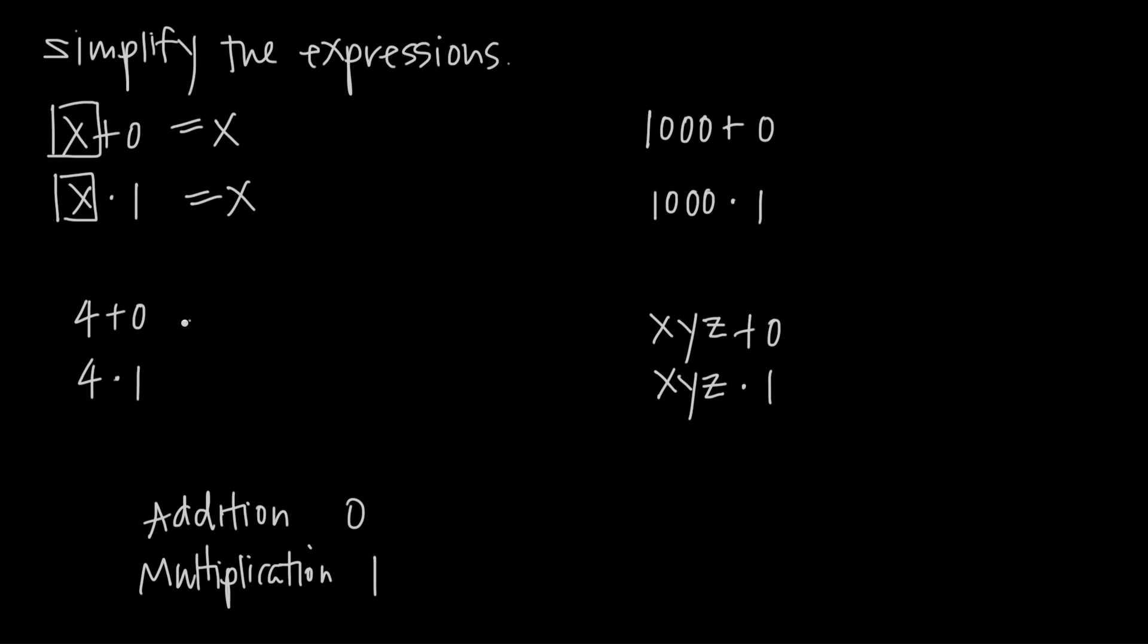We can do this with small numbers. 4 plus 0 is still 4. 4 times 1 is still 4. And we can do it with big numbers. 1,000 plus 0 is still 1,000. 1,000 times 1 is still 1,000.